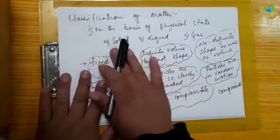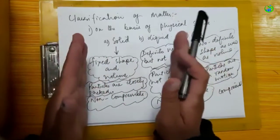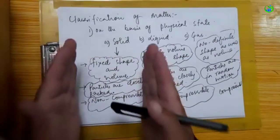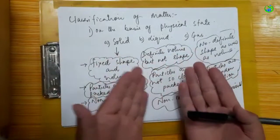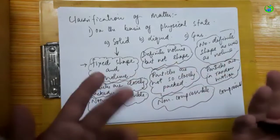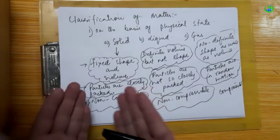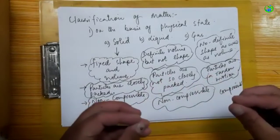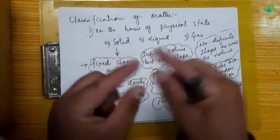We have two examples of physical state and a classification of matter. A solid has a definite shape and definite volume. A liquid has a definite volume but no fixed shape. A gas has neither a fixed shape nor a fixed volume — its particles are in random motion.